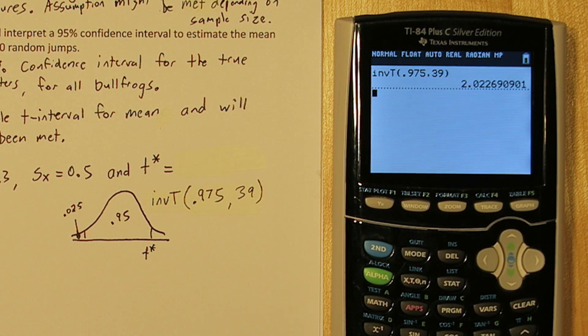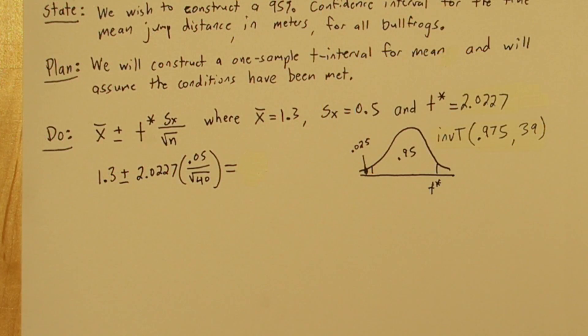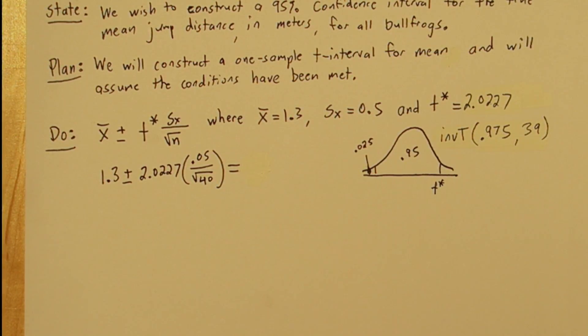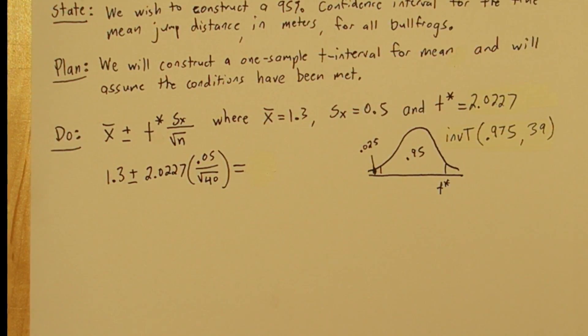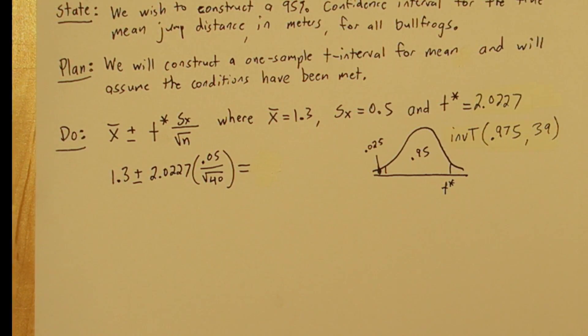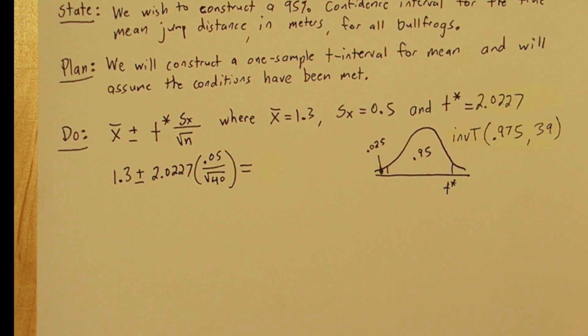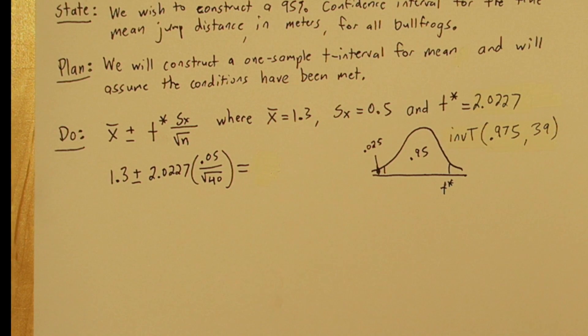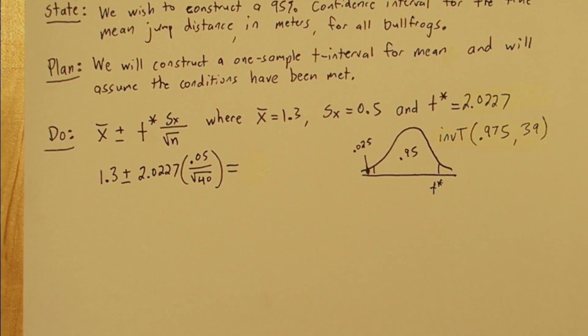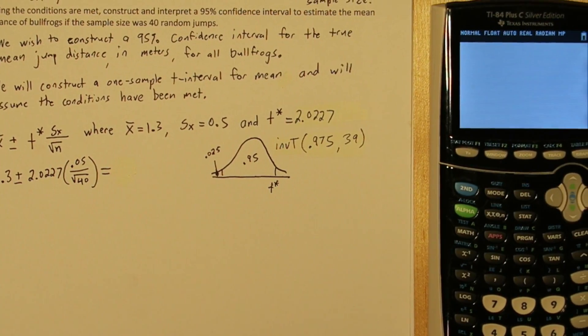There's our critical value, 2.0227 approximately. So now we're ready to actually construct our interval. 1.3 the sample mean plus or minus the critical value T star times the standard error, which is s sub x divided by the square root of the sample size. But we can actually just do this on the calculator.